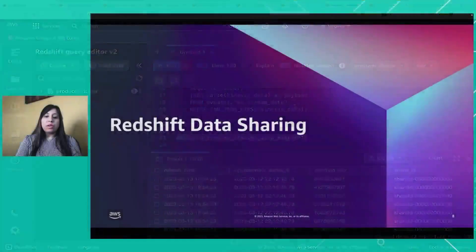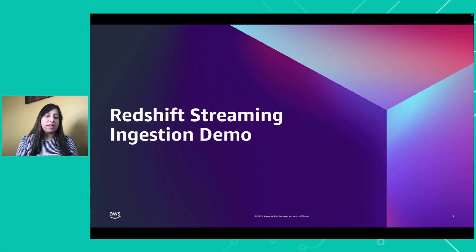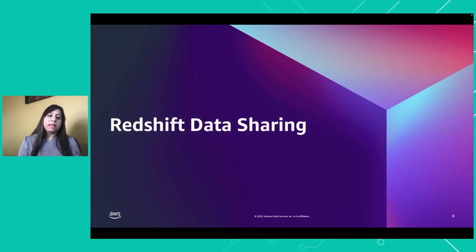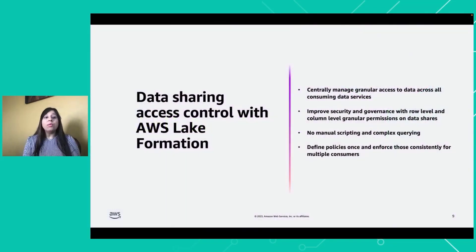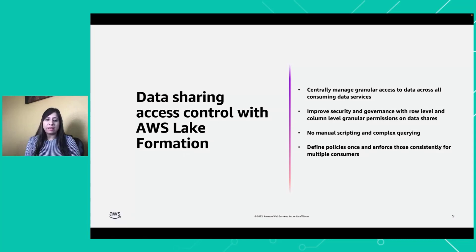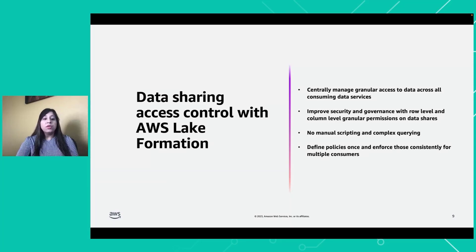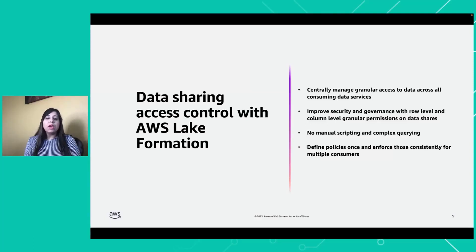Let's go back to the slides. Our next topic is Redshift data sharing. This is a new capability which is not yet GA but will be launched soon. Lake Formation can be used for sharing your data — you can centrally manage granular access to data consumer services, and improve your security and governance with row-level and column-level granular permissions. There's no need for any scripting or complex mechanism to do data sharing or governance maintenance. You can leverage existing AWS Lake Formation services and a central account to control all data sharing with Redshift, and create multiple policies for Redshift data sharing as well.